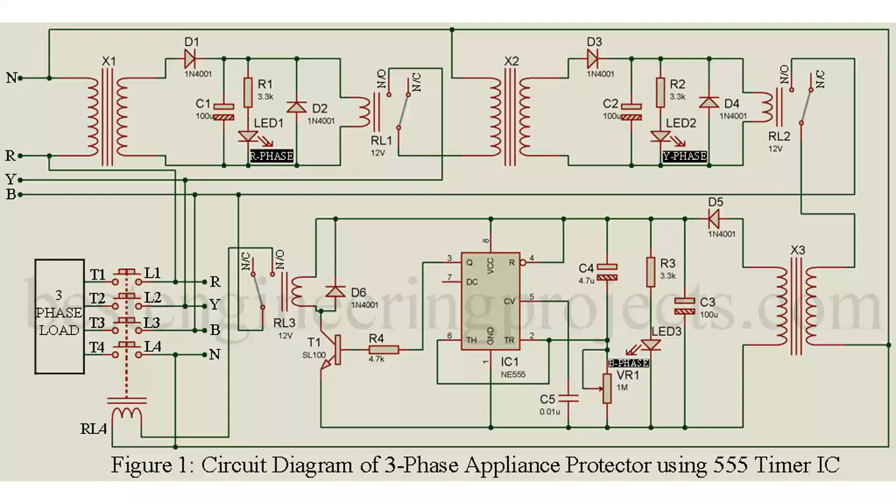When all the three phase is available, a step-down voltage is also available at secondary winding of transformer X3, which is further rectified and filtered by diode D5 and capacitor C3, respectively. This voltage activates the time delay circuit. The time delay circuit is designed using timer IC555, configured in mono-stable mode. When all the phase is available, timer IC555 get triggered and activate the output. For the given configuration, the time delay should be 4 seconds.